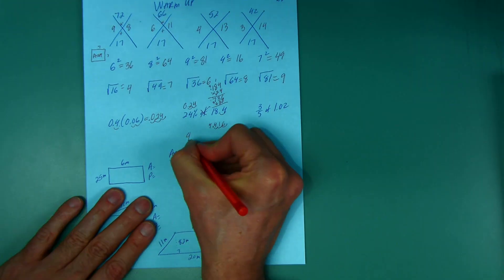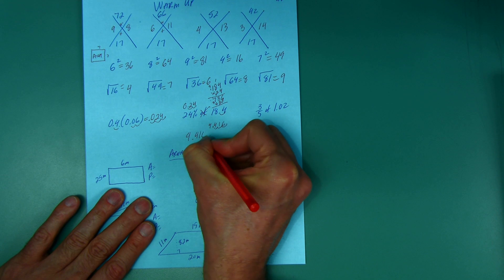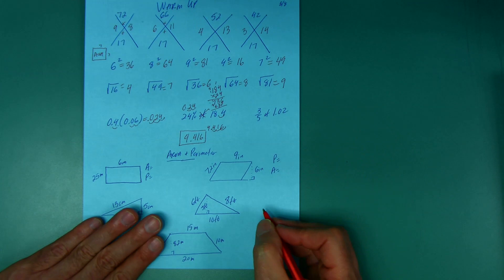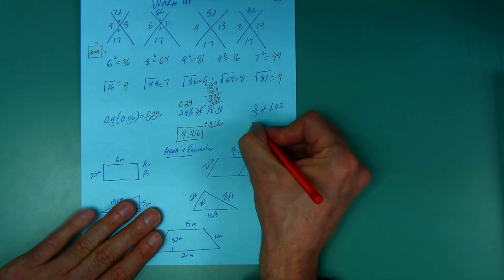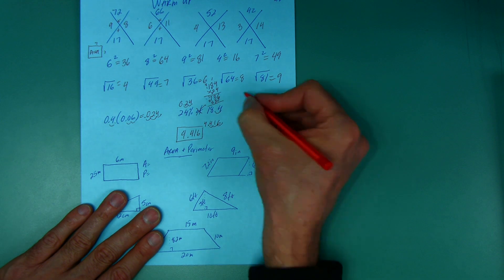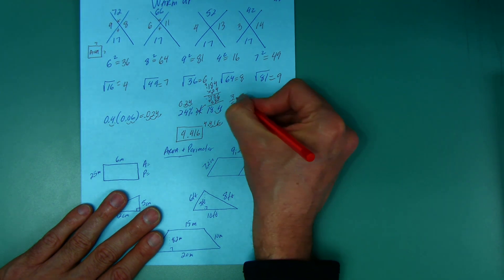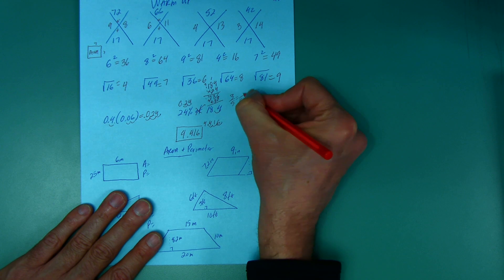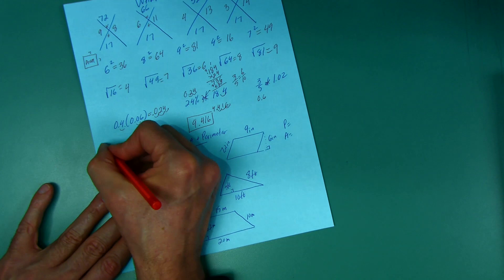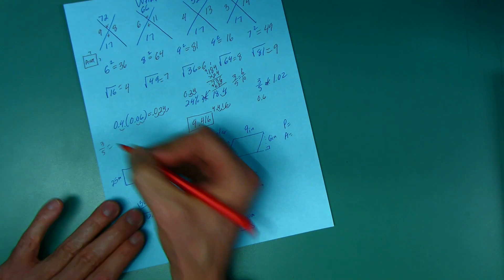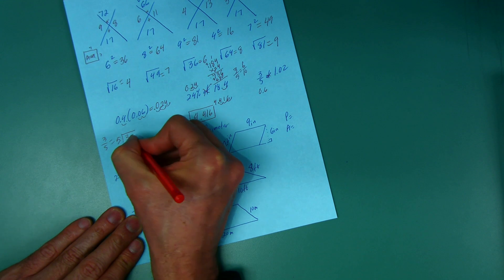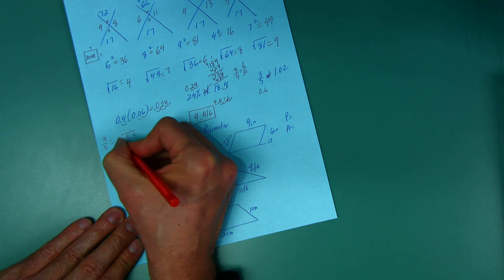OK, 3/5 of 1.02. I'm going to write 3/5 as a decimal, 0.6, times 1.02. How did I do that? Well, 3/5 as a fraction is the same as 6/10. But you can change 3/5 to a decimal by dividing the bottom into the top - the 5 into 3. And you say but it won't fit. No, add a decimal, bring it up, add a zero. 5 goes into 30, 6.